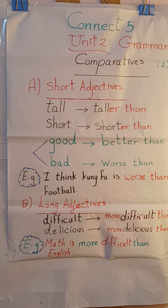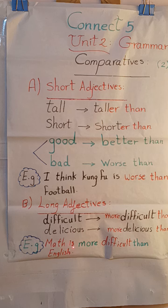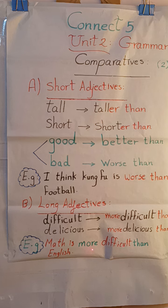Instead, I simply add 'more' before the adjective, followed by 'than.' For example: 'more difficult than,' 'more delicious than.' So: 'Math is more difficult than English.' Here I compared between two things, and because 'difficult' is a long adjective, I put 'more' before it and 'than' after.